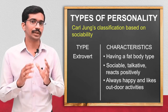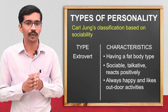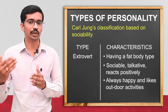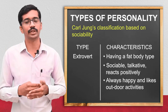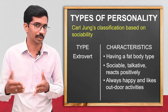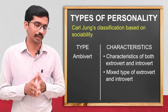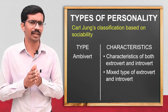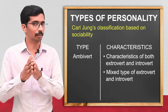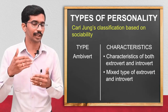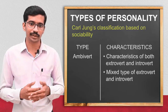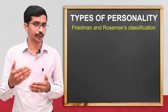Coming to the extrovert: these people usually have a fat body type. They maintain social relationships very well, are very talkative, react positively towards situations, and are always happy, liking outdoor activities very much. Then there is the ambivert — these people have the characteristics of both extrovert and introvert.